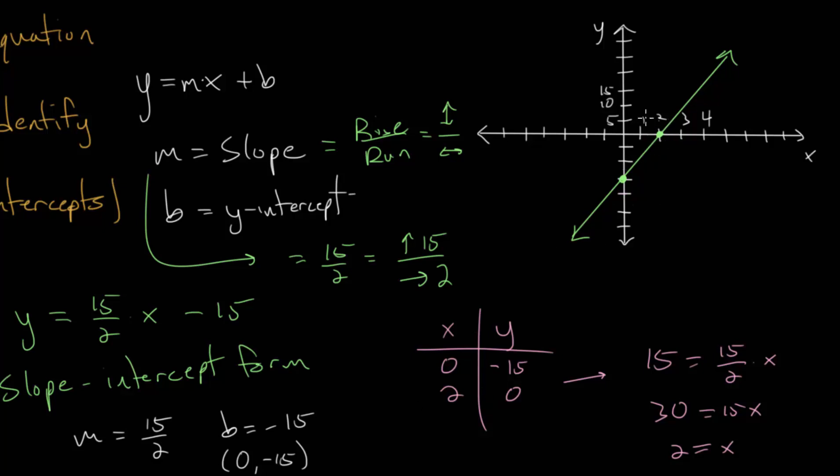And once you plot those points, then you can figure out the slope by just using this idea that slope is the rise over the run. Or really, it's the change in the y values divided by the change in the x values. And going from one point to the next, notice we go up 15. That's our change in y. And we go right 2, which is our change in x. So you get 15 over 2.